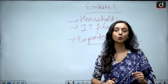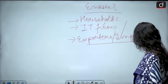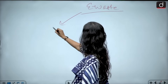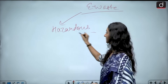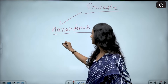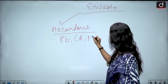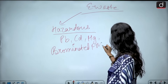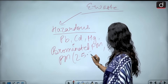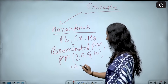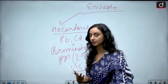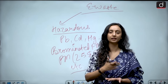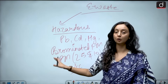Why is the treatment of e-waste so important for us? Because of the constituents of this e-waste. E-waste has a lot of hazardous substances — hazardous metals like lead, cadmium, mercury, brominated flame retardants, and particulate matter both PM2.5 and PM10. It has a lot of toxic substances which, if untreated and simply released into the atmosphere, will cause a lot of contamination in air and water and have adverse effects on our health.